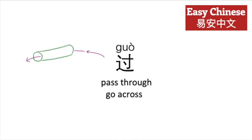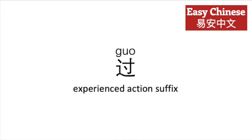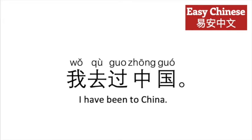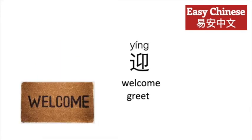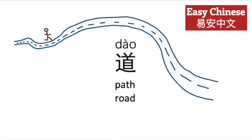Guo, meaning to pass through or go across. Also guo as the experienced action suffix, as in chu guo, zhong guo — 'I have been to China.' Qin, meaning enter or advance. Ying, meaning welcome or greet.